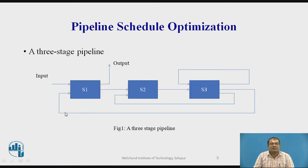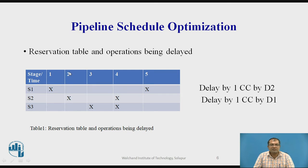Now this is a three-stage pipeline having stages S1, S2, and S3, which is made up of three types of connections: feed forward, feedback, and streamline connection. We are getting the output — say output x — which is delivered from stage S1. This is the reservation table, where along the x-axis it indicates time slots T1 to T5 and along the y-axis it indicates the different stages S1, S2, and S3.